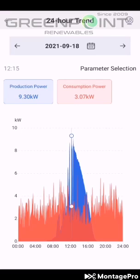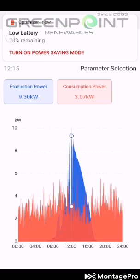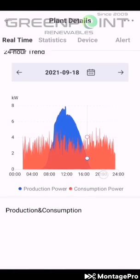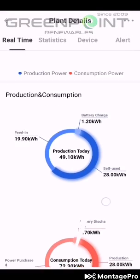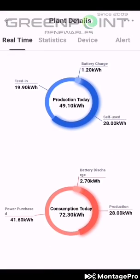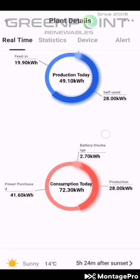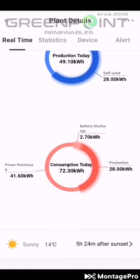He produced 9.3 kilowatt from his solar panels and was consuming 3 kilowatt. The reason production is more than consumption is because this customer is using grid feed. Scroll down a little more and you'll find the pie chart. The battery was charged today with 1.2 kilowatts, he fed in 19.9 kilowatt to the grid, and self-used 28 kilowatt. The total production for the day is 49.10 — shown here in the middle. Scrolling further down, the battery has been charged with 2.7 kilowatt for the full day.